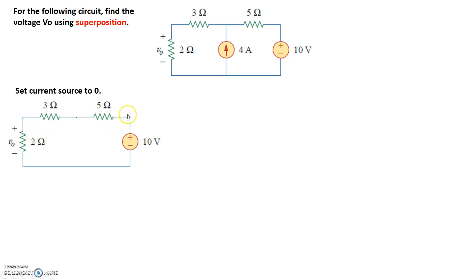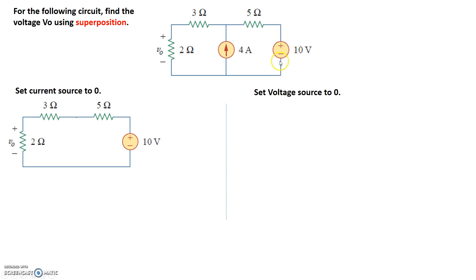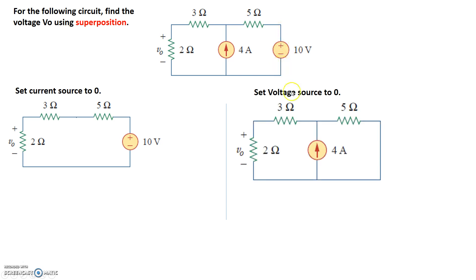In the second case, we'll keep the current source but remove the voltage source. If we set the voltage source to zero, that means the voltage source is zero, so those two points are at the exact same voltage value — the two nodes across the voltage source are equal. In other words, there's a short.